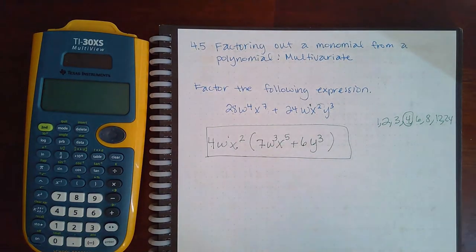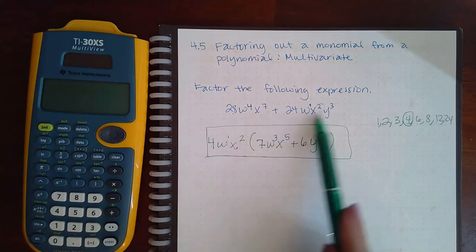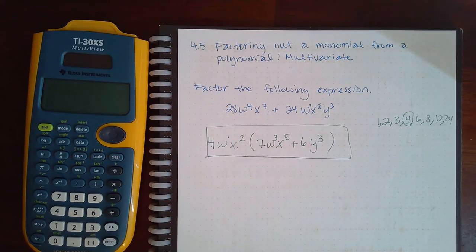So eventually you start to get faster and faster at factoring out GCFs, so that you don't have to do the division on each term to get these values inside the parentheses. That's what you want to accomplish. You want to get to that point.